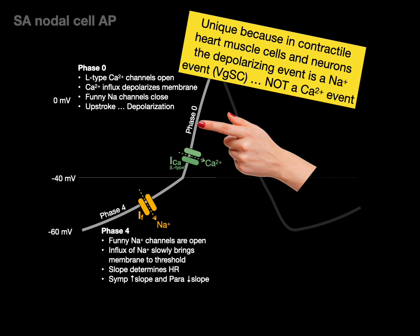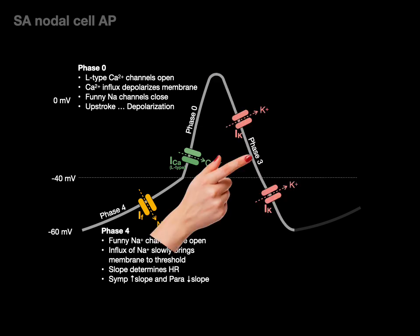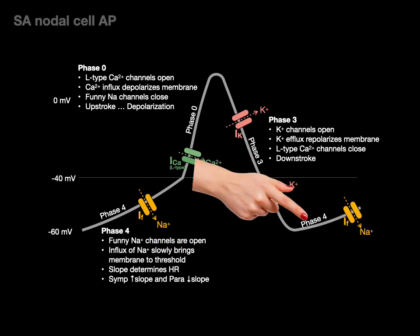This is unique because in contractile heart muscle cells and neurons, the depolarizing event is a sodium event through voltage-gated sodium channels, not a calcium event through L-type calcium channels. That's what makes SA and AV nodal cells unique. Phase three occurs at positive 20 millivolts — the potassium channels open, allowing potassium efflux that repolarizes the membrane, while the L-type calcium channels close. This is the downstroke. Finally we return to phase four, where hyperpolarization of the membrane reopens the funny sodium channels and we get the pacemaker potential again.